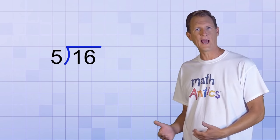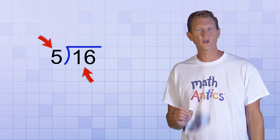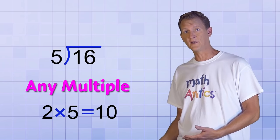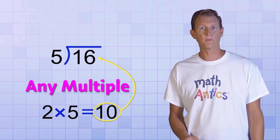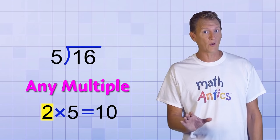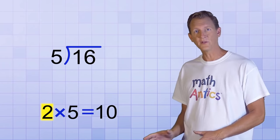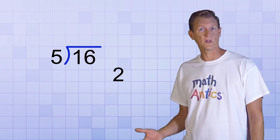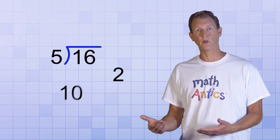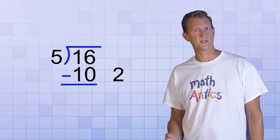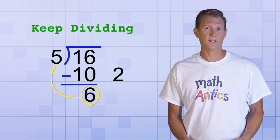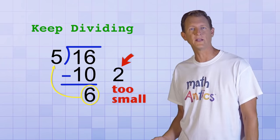Here's how it works. You start out exactly like you do with the standard division algorithm, but instead of asking how many times 5 will go into 16 and trying to get the answer as close as possible without going over, we're just going to pick any multiple that we're sure will go into it, like 2. We know that 2 fives equals 10 and it's easy to see that 10 is less than 16, so we can start by estimating that the answer will be 2. But here's the important difference: we're not going to put that 2 up in the answer line. Instead, we're going to write it off to the right side of our work. Then we'll continue like we would with the standard algorithm. 2 times 5 equals 10, so we'll put the 10 below the 16 and subtract it. 16 minus 10 equals 6. Since the remainder is greater than the divisor, we know that we can keep dividing — the initial answer we guessed, 2, was too small and needs to be adjusted.